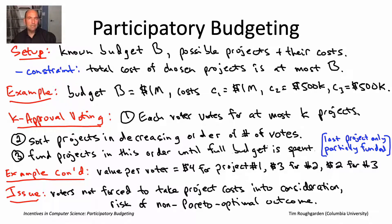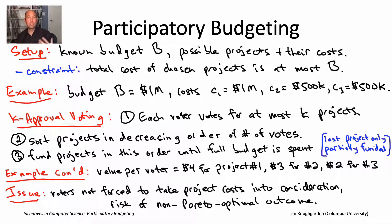In summary, K approval voting is elegant and simple, which explains why it's been frequently used and is easy to implement with a paper ballot. But it has a significant flaw: it doesn't force voters to reckon with the costs of the projects. So it's our duty to ask: could we do better? Could we have an alternative way of eliciting preferences in a participatory budgeting context so these problems are less severe? That brings us to the next slide, where I want to tell you about something called knapsack voting.